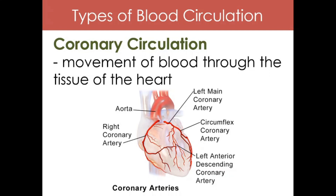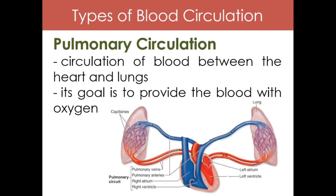The second type of blood circulation is pulmonary circulation. It is the circulation of blood between the heart and the lungs. As you all know, merong connection ang circulatory system at ang respiratory system. The goal of pulmonary circulation is to provide the blood with oxygen — kailangan ng katawan natin ng oxygen, kaya meron tayong tinatawag na pulmonary circulation para mag-supply ng oxygen sa ating dugo.